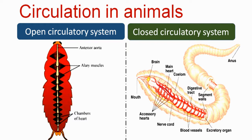An example of a non-chordate animal with a closed circulatory system is phylum Annelida. Annelida is a higher invertebrate animal. Closed circulatory system is present in Annelida.